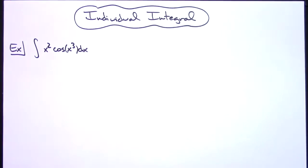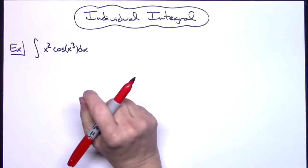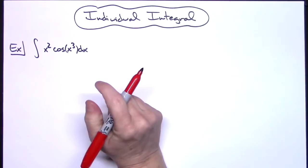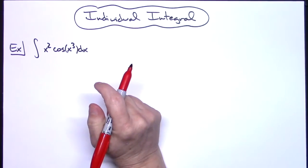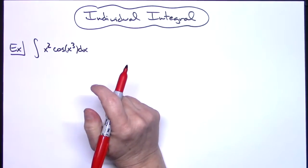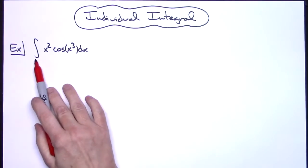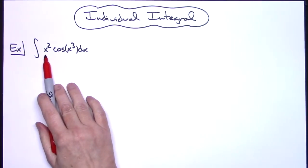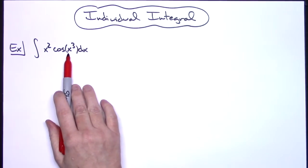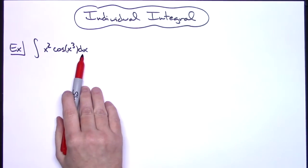In this video we're going to take a look at an individual integral. It's going to be a basic u-substitution integral which would typically be found in a Calc 1 class. We've got the integral of x squared cosine x to the third dx.